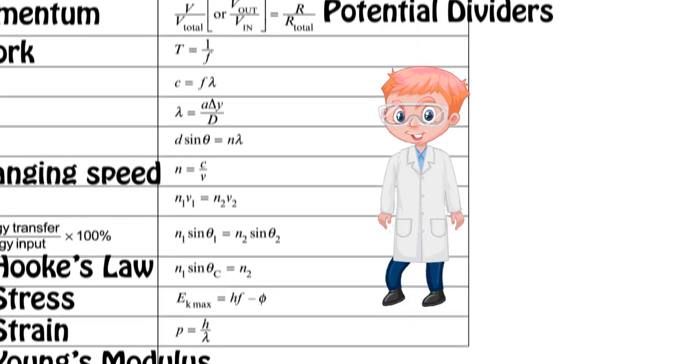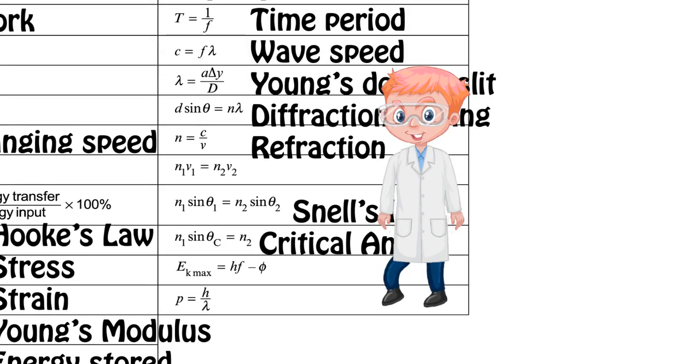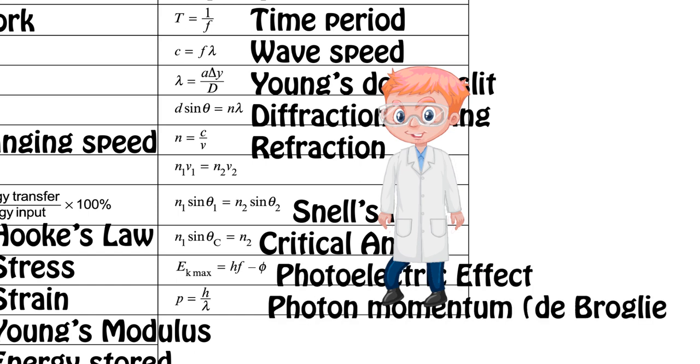The next seven are for waves. The tricky one out of these is Young's double slits. Remember here A is slit spacing, delta y is fringe spacing or the gap between two bright or two dark fringes, and D is the distance between the screen and the slit. The final two equations are for quantum effects: the photoelectric effect and photon momentum or the de Broglie wavelength.